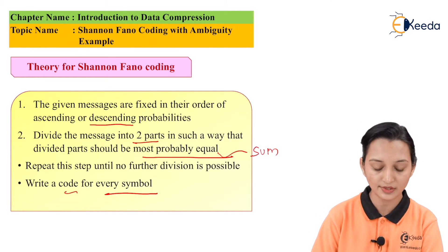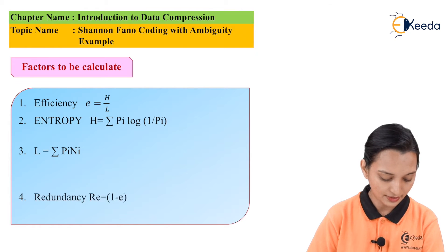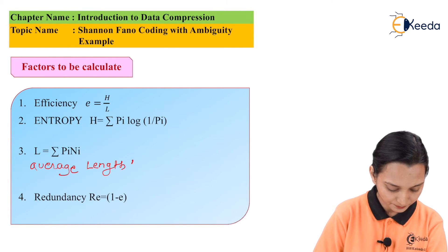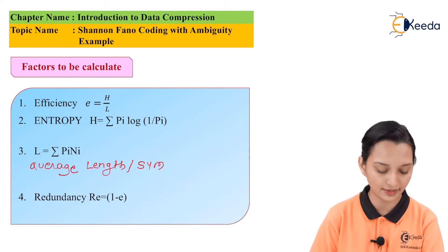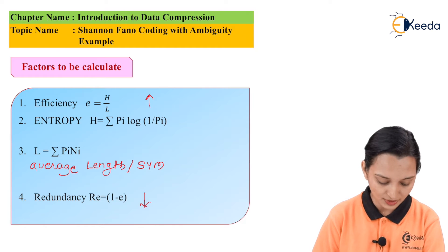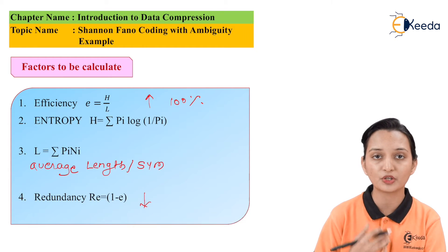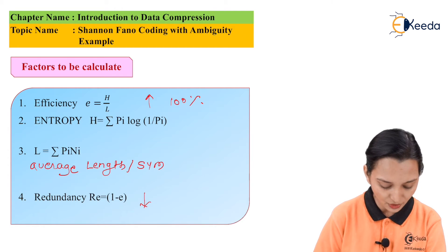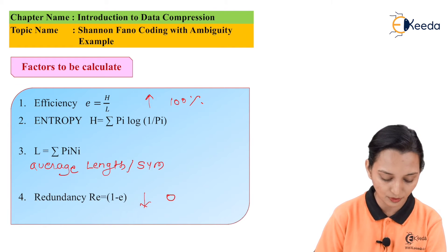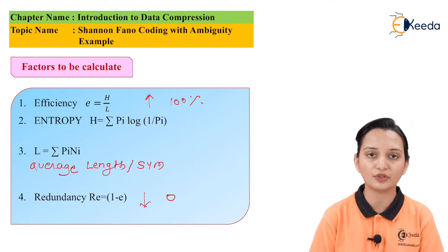With the help of these simple rules, we are able to calculate efficiency, entropy, average length per symbol, and redundancy. To achieve maximum efficiency, redundancy should be as low as possible because ideally efficiency should be 100% and redundancy should be 0. Practically this is not possible because efficiency is affected by the relationship between average length and entropy. Average length and entropy are the most important factors calculated using Shannon-Fano.